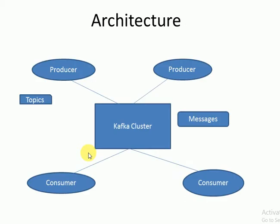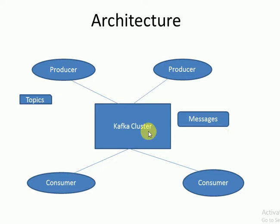Looking at the Apache Kafka architecture: in an Apache Kafka cluster there are some brokers. Producers send messages to the Kafka broker, and those messages are then delivered to consumers. Topics are the fields of a message — a topic represents a category or field of messages. A producer is a process which publishes messages through the Kafka broker, with the Kafka cluster sitting in between producers and consumers.